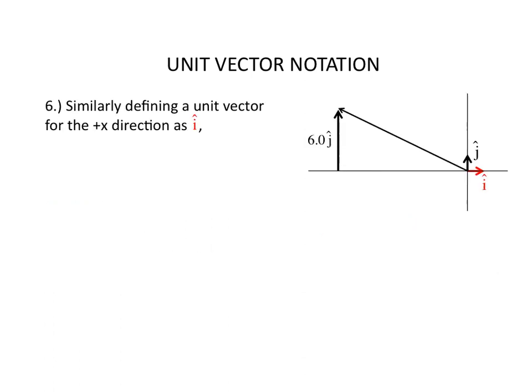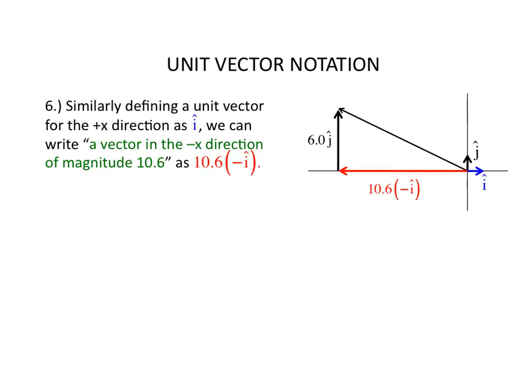The unit vector in the x direction is an i with a hat over it. So if I need a vector in the minus x direction whose magnitude is 10.6, I would take minus i hat, and I would multiply it by the scalar 10.6. I would probably then take the negative sign and pull it out in front, because it tends to get lost inside here. And I would end up with this vector whose magnitude would be 10.6 and whose direction would be in the negative x direction.